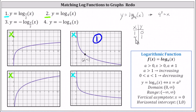We're looking for the graph that is increasing and contains these two points. The increasing functions are on the left. Only one of them contains the point four comma one, which is the top graph. This is the correct graph for the equation y equals log base four of x. We label this number two.